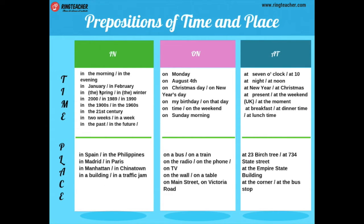Para lugar, usamos la preposición 'in': in Spain, in the Philippines, in Madrid, in Paris, in Manhattan, in Chinatown. Para describir un lugar específico — en España, en Filipinas, en Madrid, en París — y así sucesivamente.